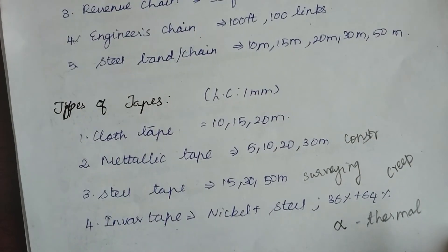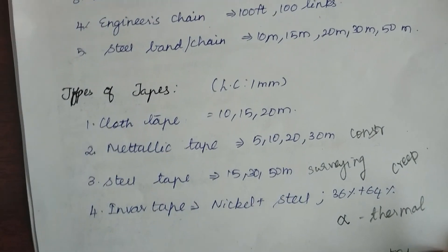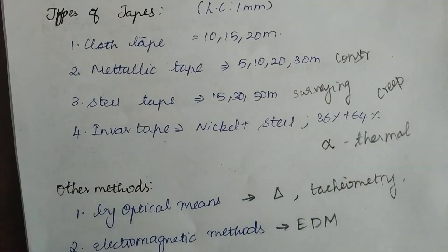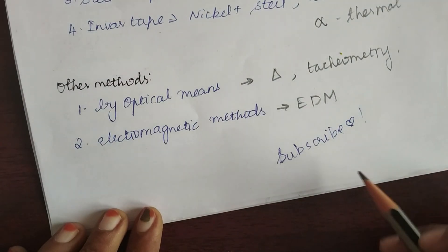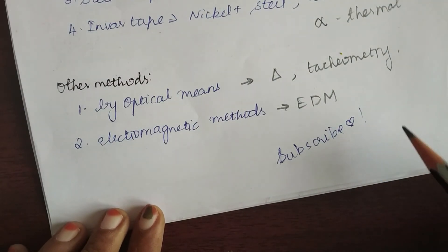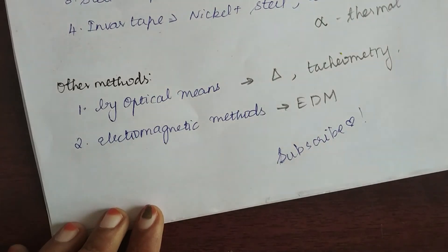So these are the types of chains, tapes, and other methods of finding linear measurements. Do give this video a like, please subscribe to the channel, and share the video. See you in the next video — bye!